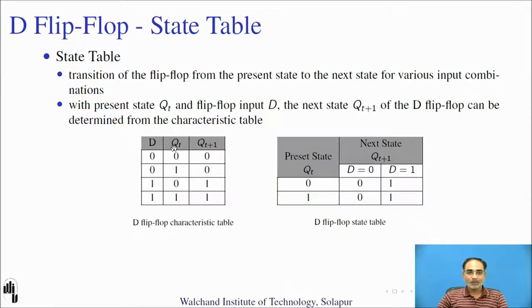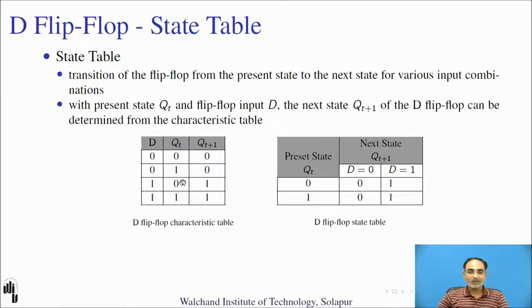Using the characteristic table, we can derive the state table. When present state is 0 and D is 0, the next state is 0. When present state is 1 and D is 0, the next state is 0. When present state is 0 and D is 1, the next state changes to 1. When present state is 1 and D is 1, the next state remains 1. This is how you derive the state table for the D flip-flop.